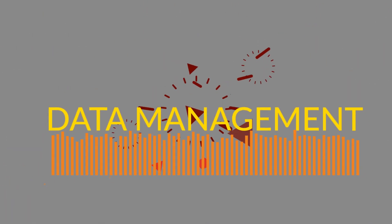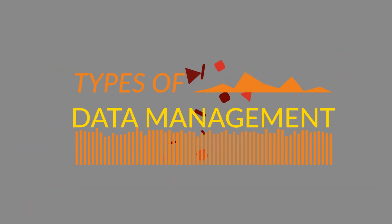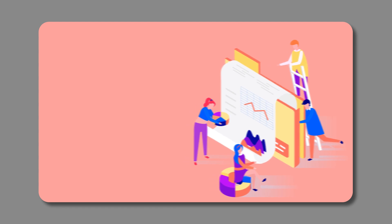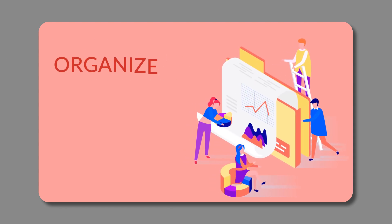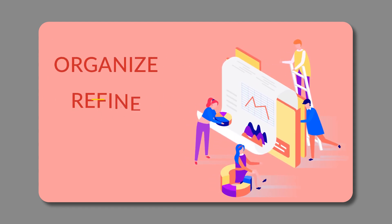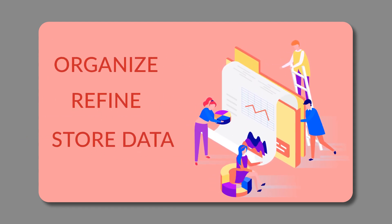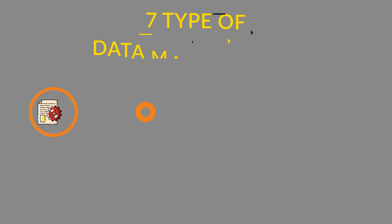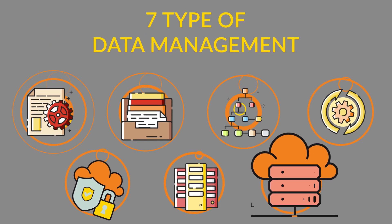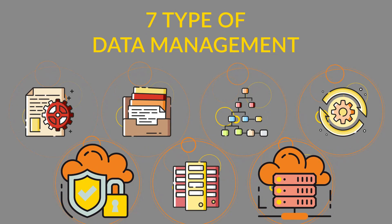Types of Data Management. Data Management is a set of practices that organize, refine, and store your data. These practices are broken down into seven key areas.